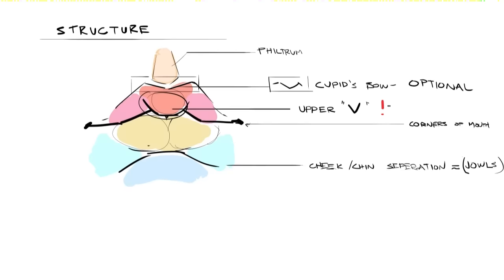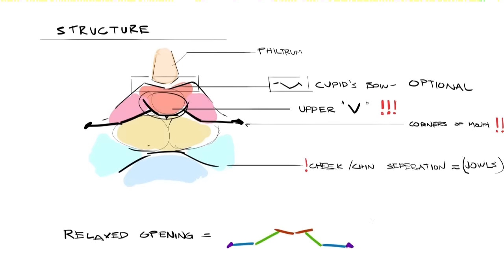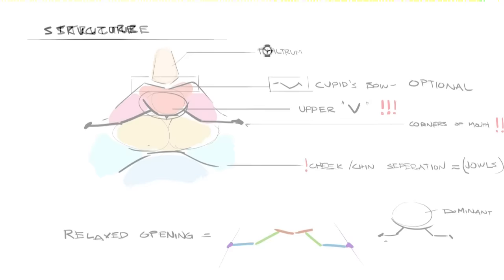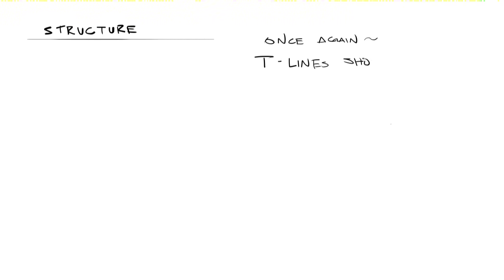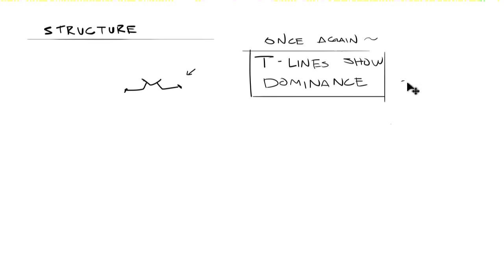We'll call it the separation between the bottom lip and the chin. In its most relaxed form, the opening of the mouth tends to slope down and away from the center in distinct lines, and the corners of the mouth follow that down and outward flow. Don't forget that the central flesh of the upper lip is in front of everything else — all of your T-lines will be dictated by shape dominance, which is a cornerstone of good organic drawing.